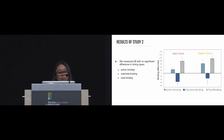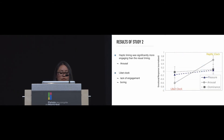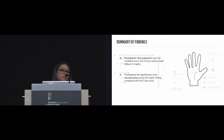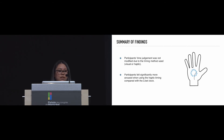In the results, we found something similar: about 80 milliseconds in total binding, and no statistically significant difference in action binding, outcome binding, or total binding. However, in the subjective evaluation of emotion, we found that participants felt more aroused when using the haptic timing compared with the traditional Libet clock, though we found no effect on pleasure or dominance. This suggests that participants' time judgment was not modified by the timing method used, whether visual or haptic, but participants felt more aroused when using the tactile stimulation.